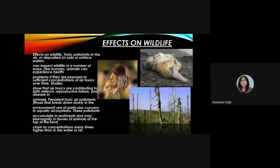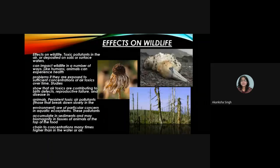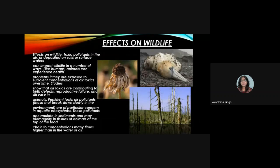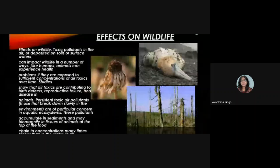Air pollutants carried to soils or surface waters can impact wildlife in a number of ways. Like humans, animals can experience health problems if exposed to sufficient concentrations of air toxics over time. Studies show that air toxics contribute to birth defects, reproductive failures, and disease in animals. Persistent toxic air pollutants that break down slowly are of particular concern — in aquatic systems, these pollutants accumulate in sediments and may biomagnify in tissues of animals at the top of the food chain to concentrations many times higher than in the water or air, as seen in the picture showing harmful effects on flora and fauna.